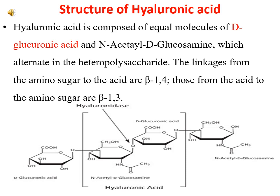Hyaluronic acid is composed of equal molecules of glucuronic acid and N-acetyl-D-glucosamine. The linkages from the amino sugar to the acid are beta-1,4, and those from the acid to the amino sugar are beta-1,3, as seen in the structure.